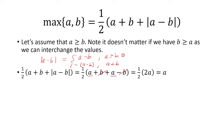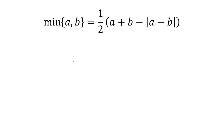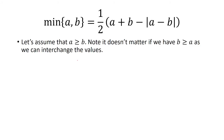So what we did was we showed that the maximum of a and b is indeed a, and that's exactly what we assumed. Now for the minimum of a and b, we're going to assume the same thing — that a is greater than or equal to b.